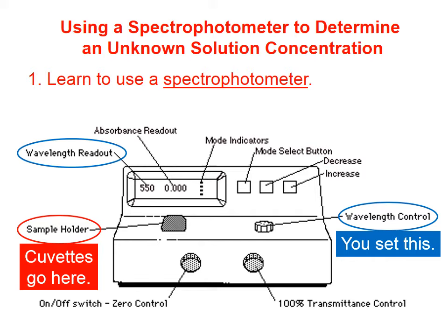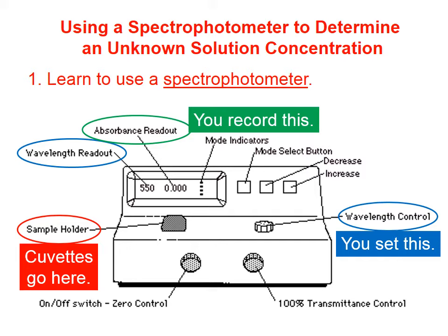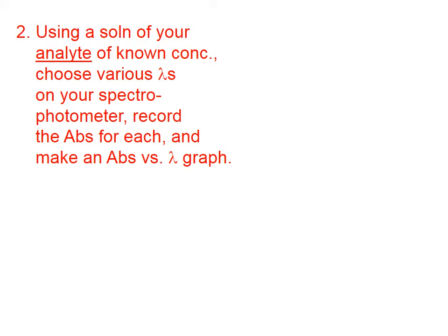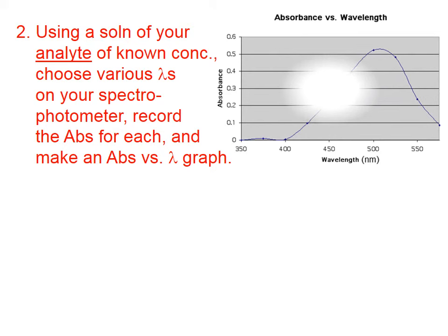Once we put our cuvette in, we will read a particular absorbance, based on the difference between the emitted light and the transmitted light. The second step is that we need to use a solution of our analyte of known concentration. We're going to choose various wavelengths on our spectrophotometer, record the absorbance for each of those known samples, and make an absorbance versus wavelength graph.